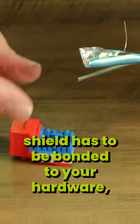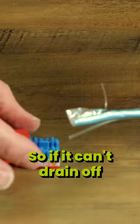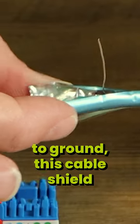The cable shield has to be bonded to your hardware so it can drain off the ground. So if it can't drain off the ground, this cable shield will not function properly.